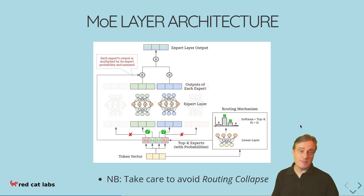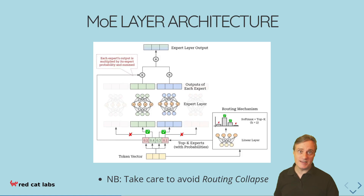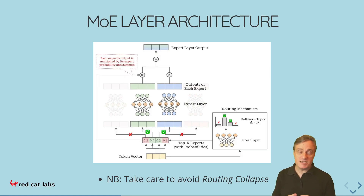One important issue is avoiding routing collapse. This can happen during training where one of the experts decides to grab all of the tokens for itself, causing the other experts to learn less and become less and less worth having — essentially going into a vicious cycle of training only a few things to be good. To counter this, people use an auxiliary loss which forces the routing to be effectively even amongst the experts.